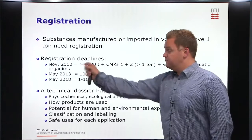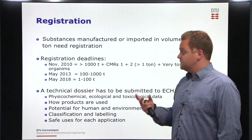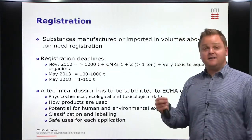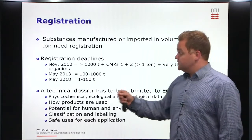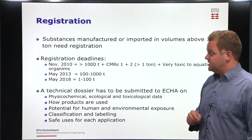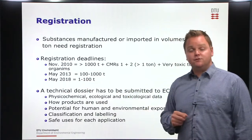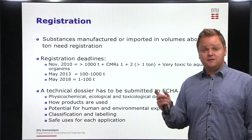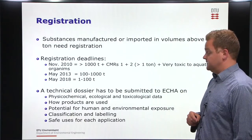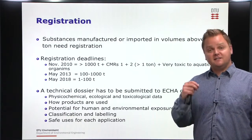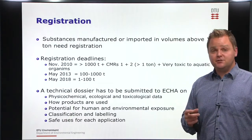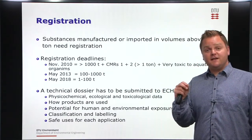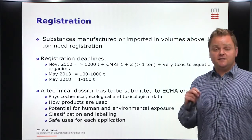There are specific registration deadlines that industry must meet. The first was in November 2007, where all substances produced or imported in more than a thousand tons needed registration. There is also a deadline in May 2018, where all substances produced between one and a hundred tons need to be registered with the European Chemical Agency. For each registration, a technical dossier has to be submitted by industry to the European Chemical Agency, and the legislation is very specific about what this technical dossier needs to contain.